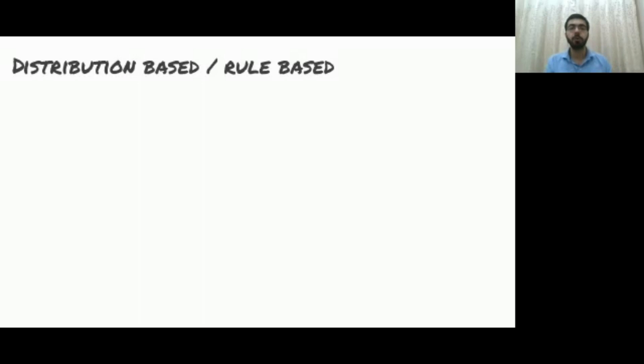Distribution based or rule based anomaly detection is more to do with rules than an automatic system which figures out rules. I'll take you through this example. Standard deviation is a measure of how spread out the data is.